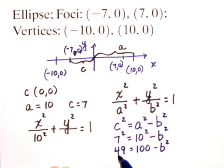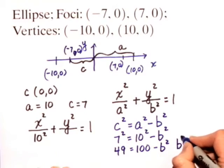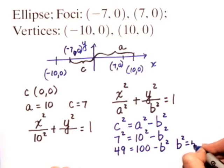If we move the b² over to the left-hand side and the 49 over to the right, we get b² equals 100 minus 49, or 51.